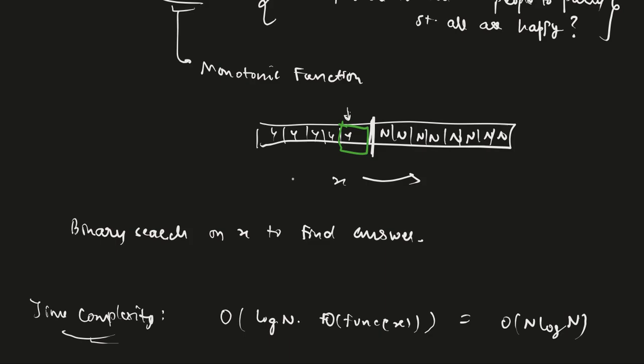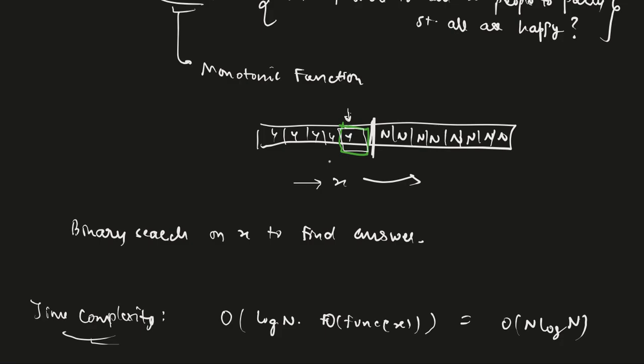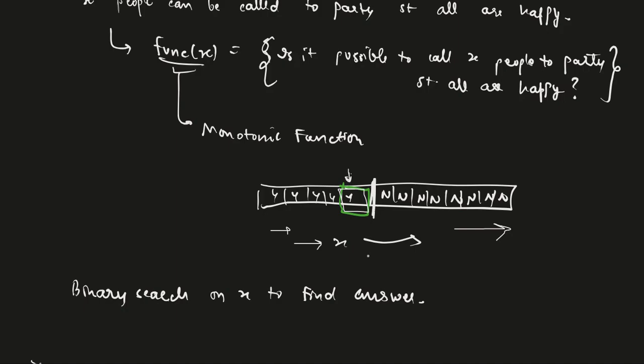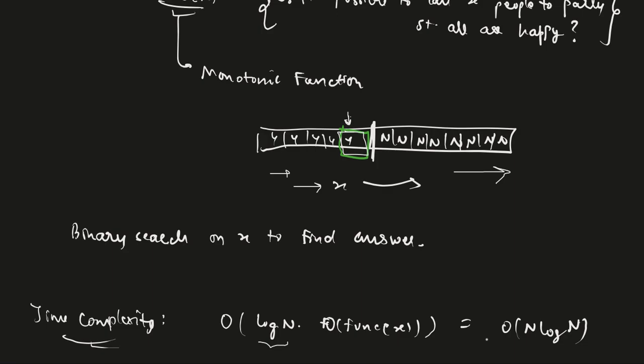So we will binary search on the parameter x to find the answer. This is the solution time complexity, simply order of log of the size of x, the range of values of x. Now the range of values of x can vary from 1 to n. So this is order of log n times order of function of x. Now function of x simply involves a loop over n. So it will be the overall time complexity, it will be order of n log n.